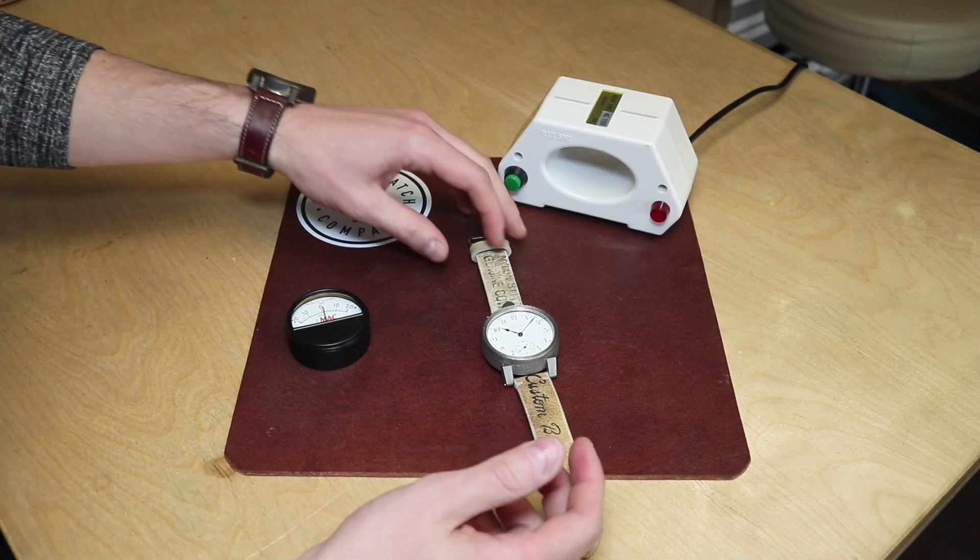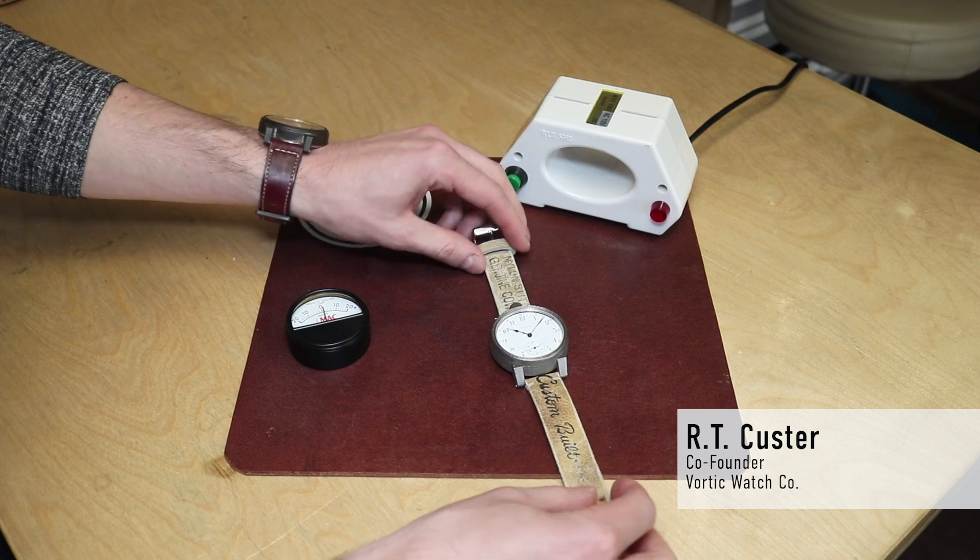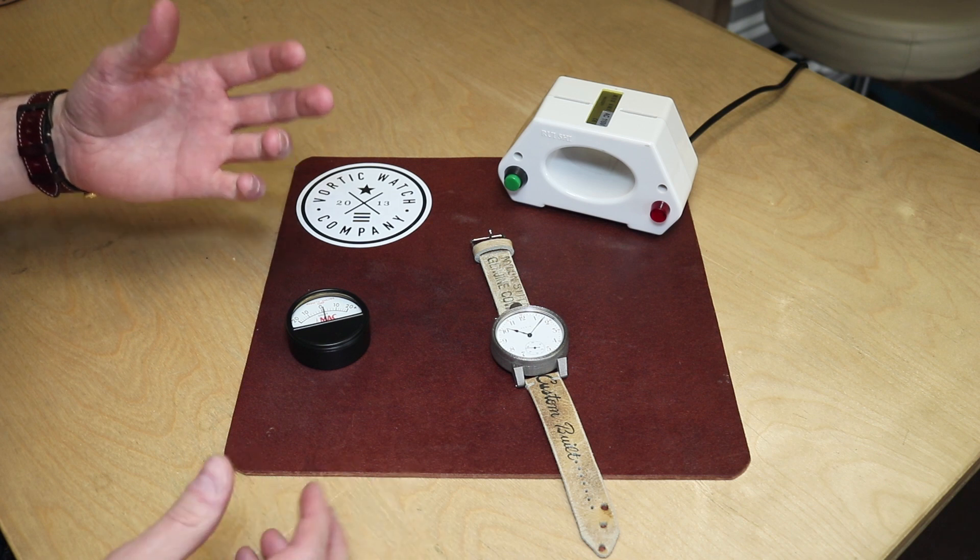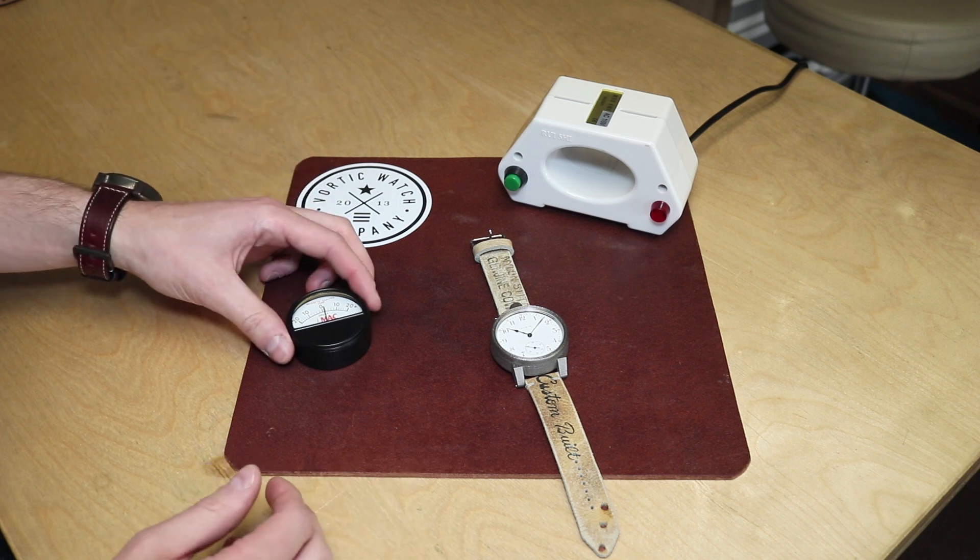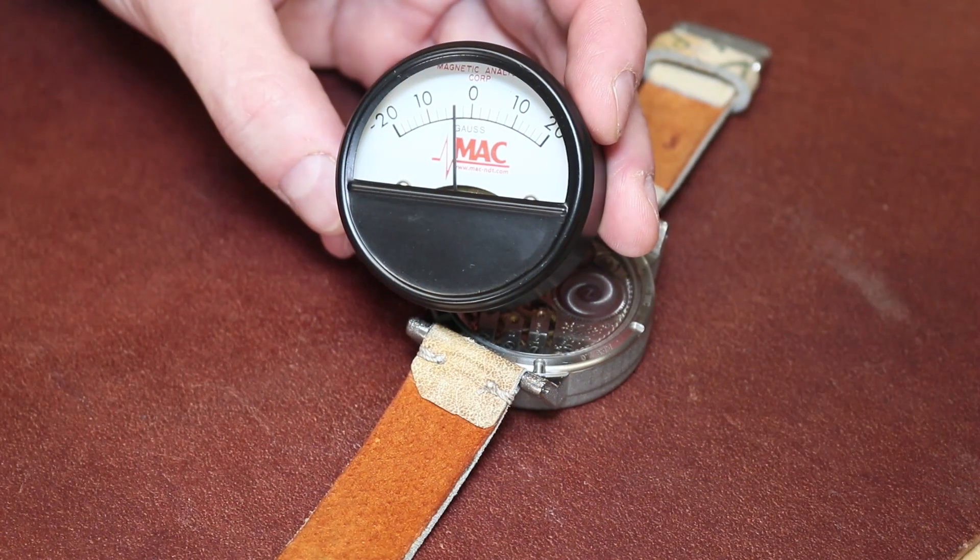So today at Vortec Watch Company, we're going to show you how to demagnetize a watch. This is one of the more common things that we get questions about when a watch isn't keeping quite perfect time. A lot of times a mechanical movement, especially a hundred-year-old mechanical movement, can get magnetized.